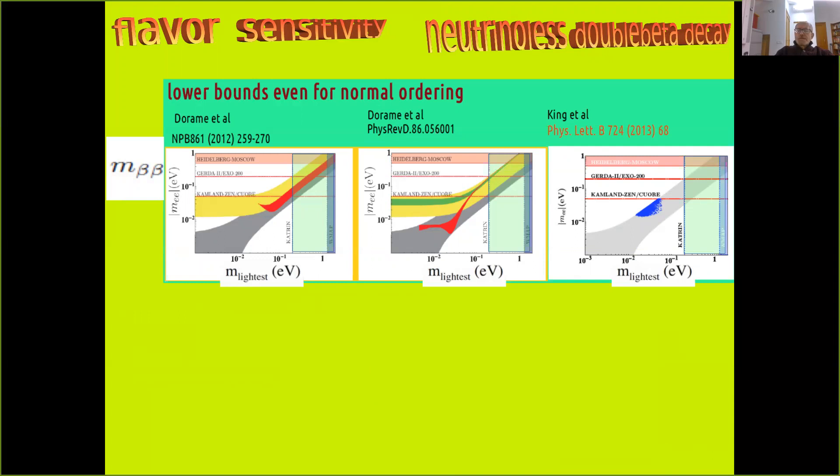Now, if all three neutrinos are massive, then as I said there can be a destructive interference, as you can see in these gray regions for the case of normal ordering. But one can also add here that in flavor theories which try to bring some understanding of the mixing parameters measured by neutrino oscillation, it more often than not happens that there are lower bounds on the amplitude of neutrinoless double beta decay. And this is perhaps encouraging, however it depends very strongly on the particular model.